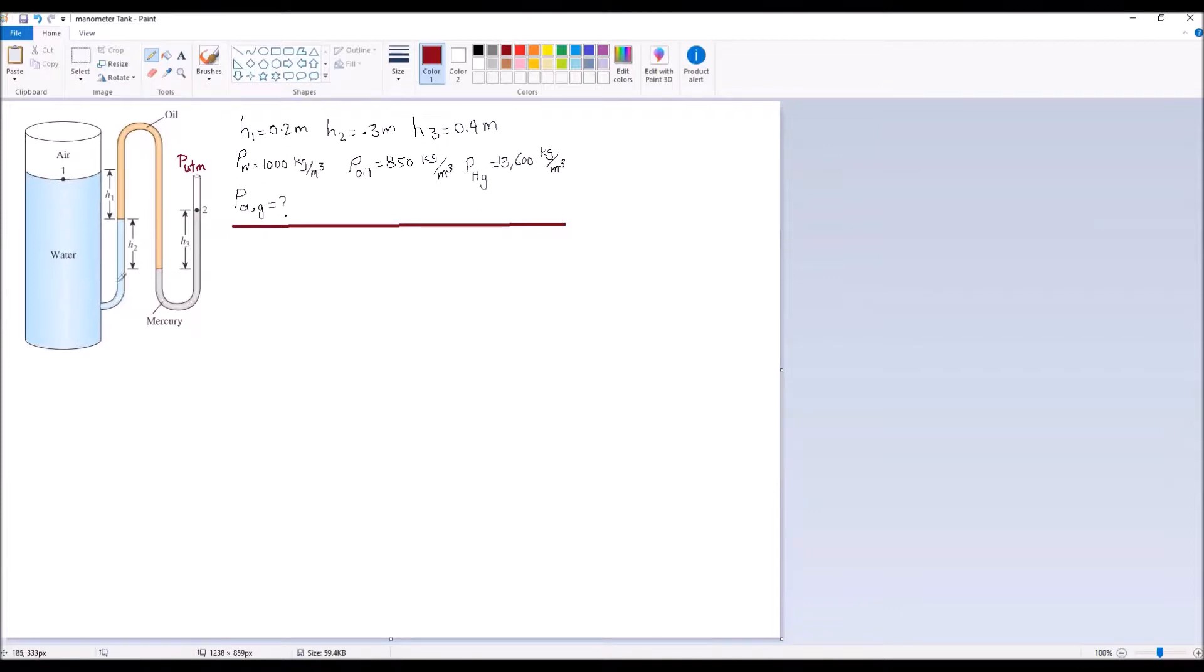We have water here, the light blue color is water, then the orange color liquid is oil, and then gray color liquid is mercury.